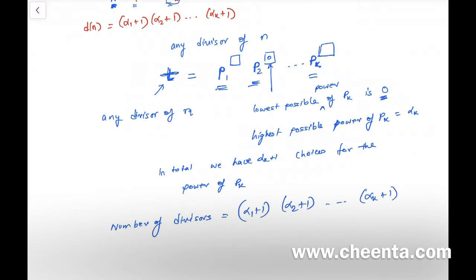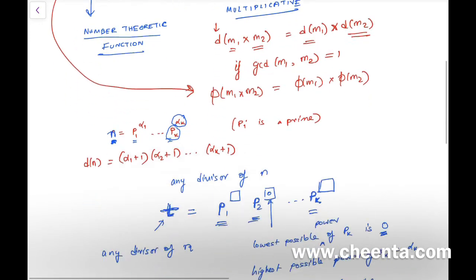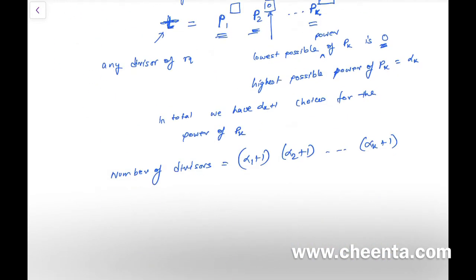The same logic holds for p₁, p₂, and so on. So the total number of divisors is (α₁+1)(α₂+1)·…·(αₖ+1). This is a combinatorial proof — you're just counting the number of possibilities for the power of each prime factor. Now the φ function is a little more difficult. The formula for φ(n) is: φ(n) = (p₁^α₁ − p₁^(α₁−1))(p₂^α₂ − p₂^(α₂−1))·…·(pₖ^αₖ − pₖ^(αₖ−1)).